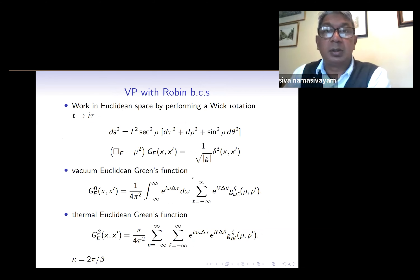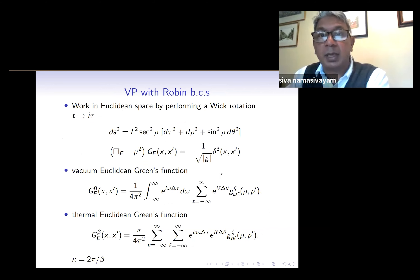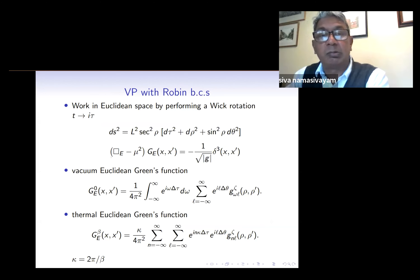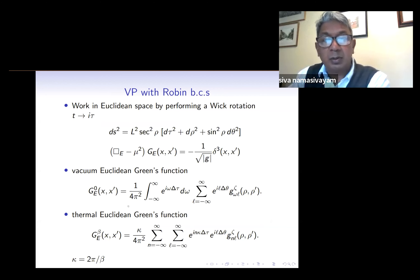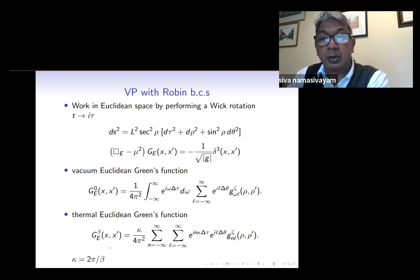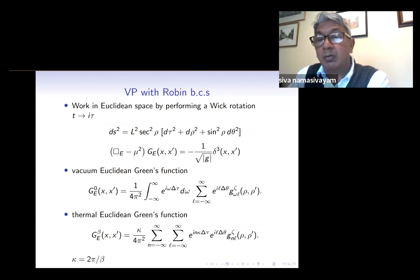We now turn our attention to the vacuum polarisation with Robin boundary conditions. To do this we work in Euclidean space by performing a Wick rotation of the metric, shown here. Our Euclidean Green's function satisfies a very similar differential equation where the box operator is now in Euclidean space. The forms of the vacuum and thermal Euclidean Green's functions are rather complicated, but we apply the Robin boundary conditions on the radial Green's functions shown here as g.